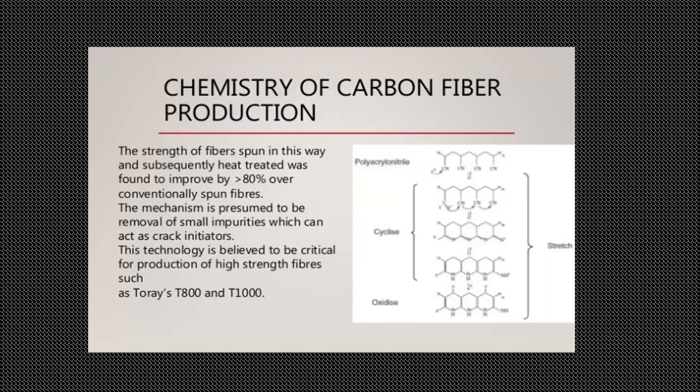Next is the chemistry of carbon fiber production. The strength of fiber spun in this way and subsequently heat treated was found to improve by greater than 80% over conventionally spun fibers. The mechanism is presumed to be removal of small impurities which can act as crack initiators. This technology is believed to be critical for production of high strength fibers such as Toray T-800 and T-1000.